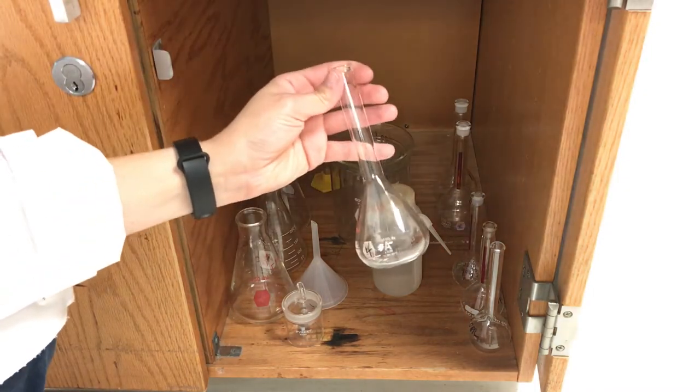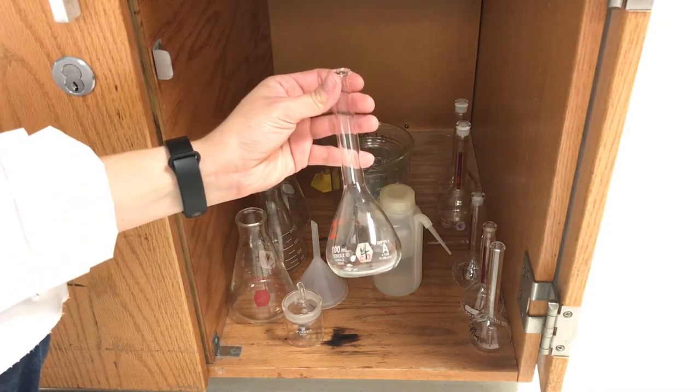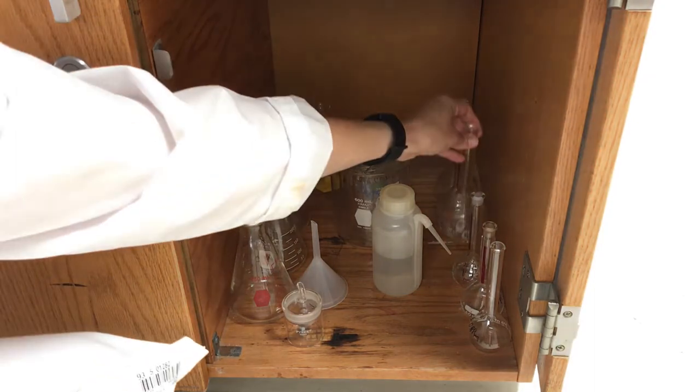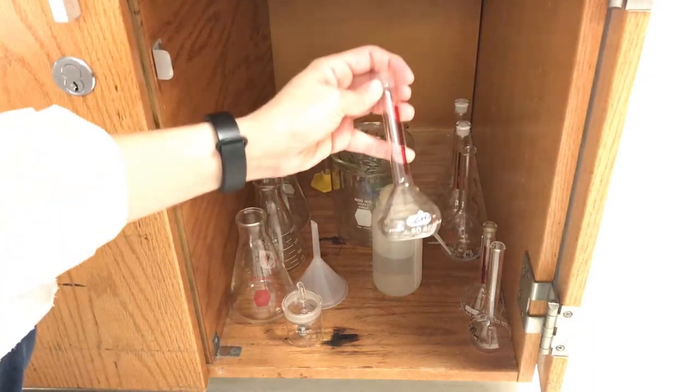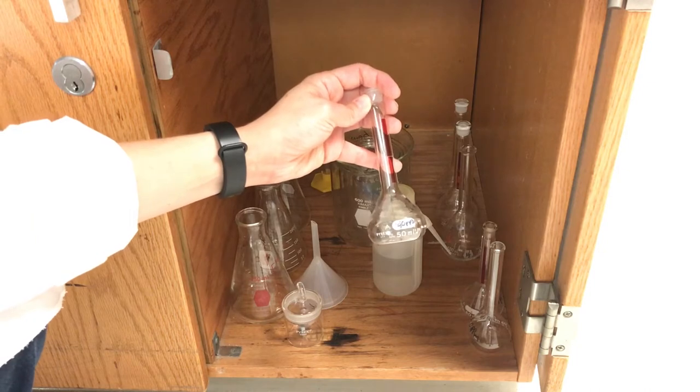Also in the cupboard you're going to have three 100 milliliter volumetric flasks. You're going to have three 50 milliliter volumetric flasks.